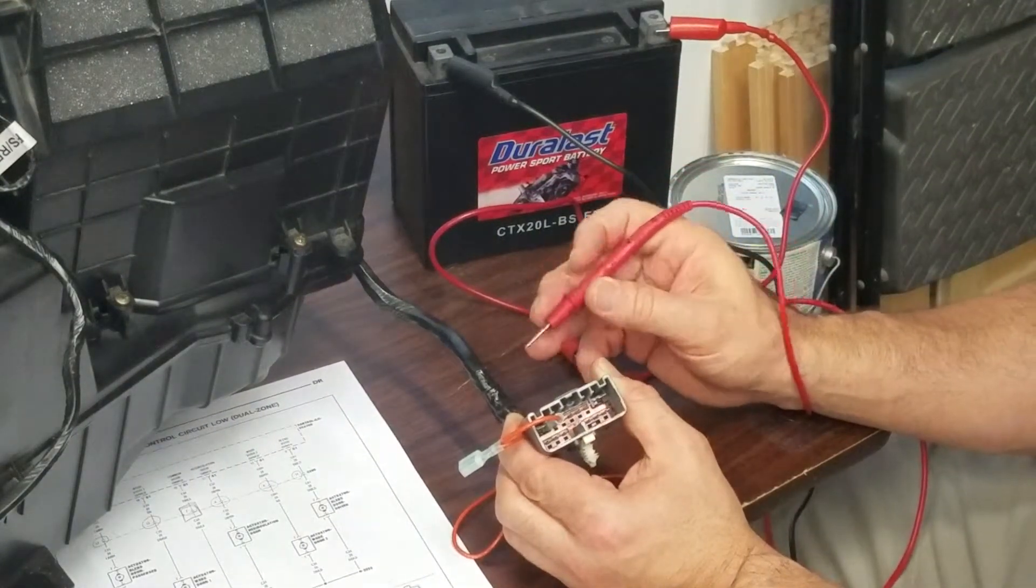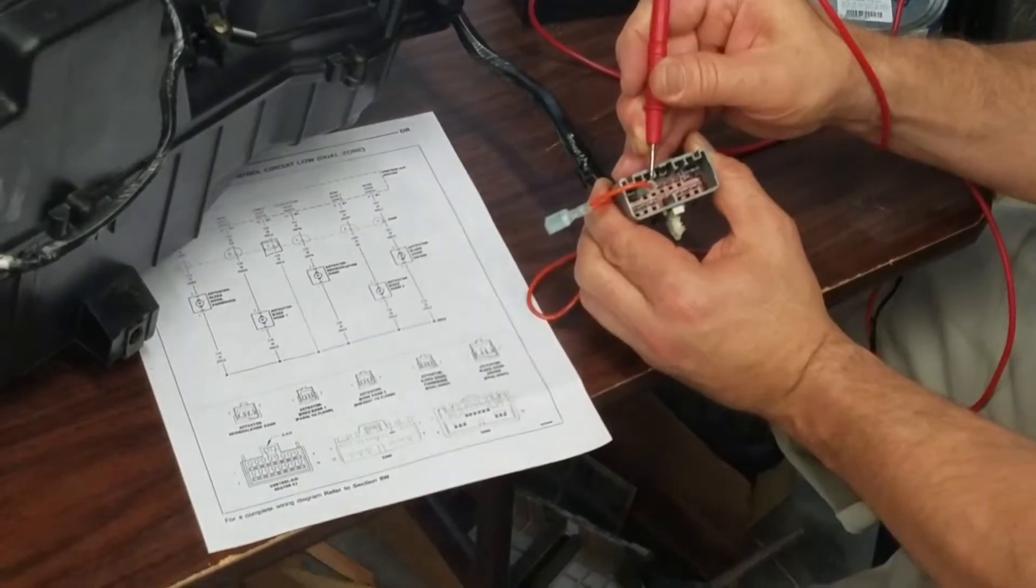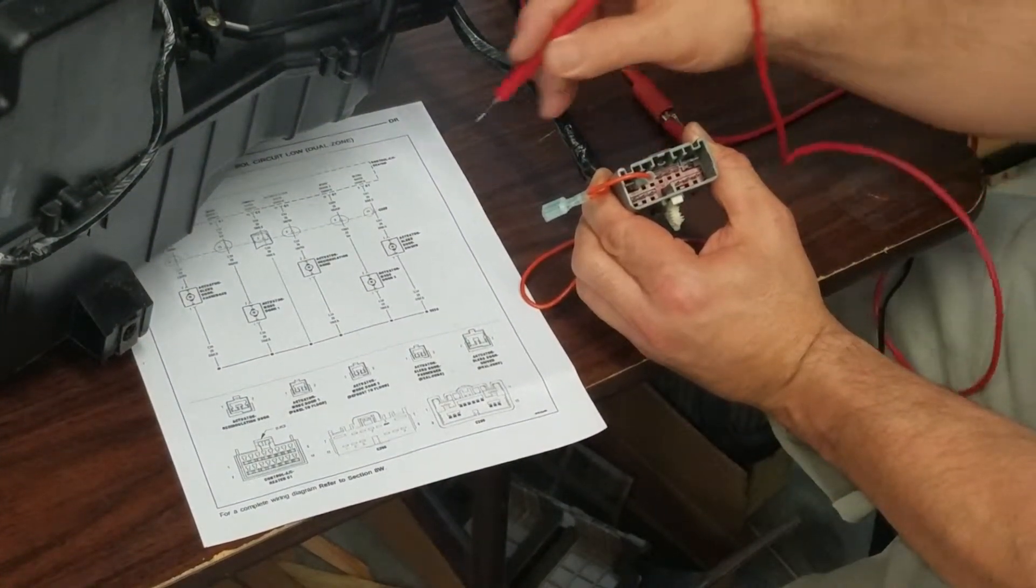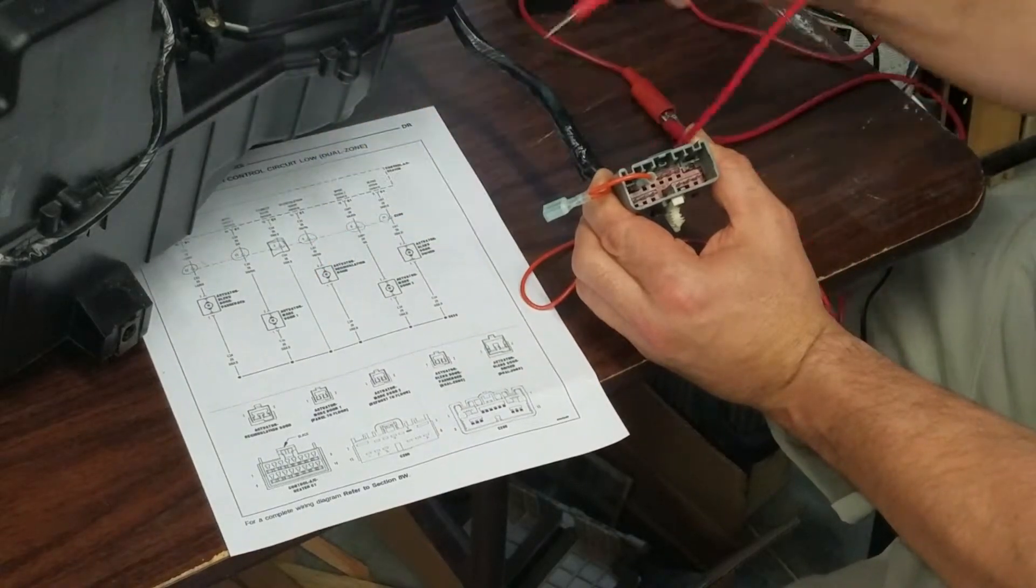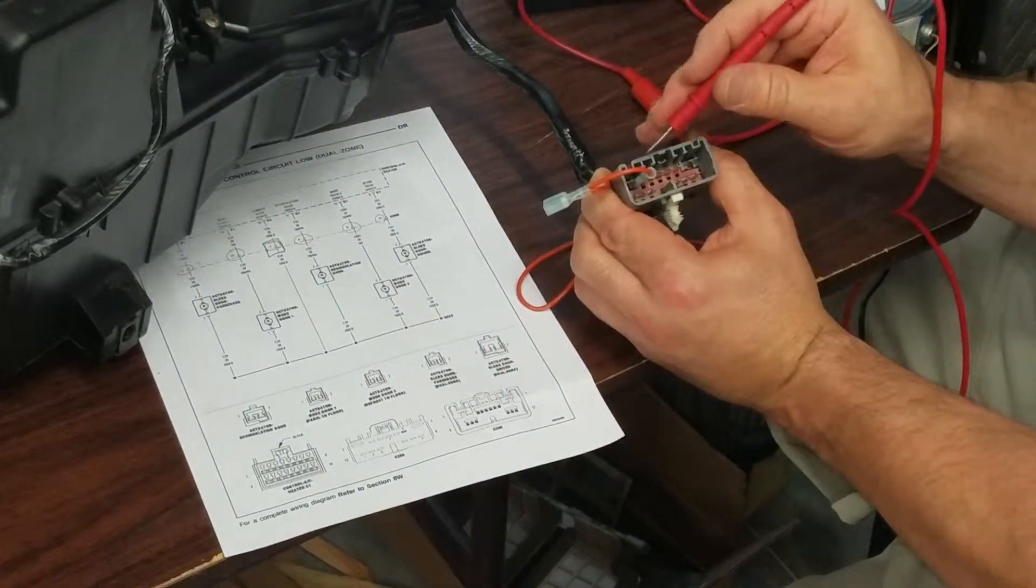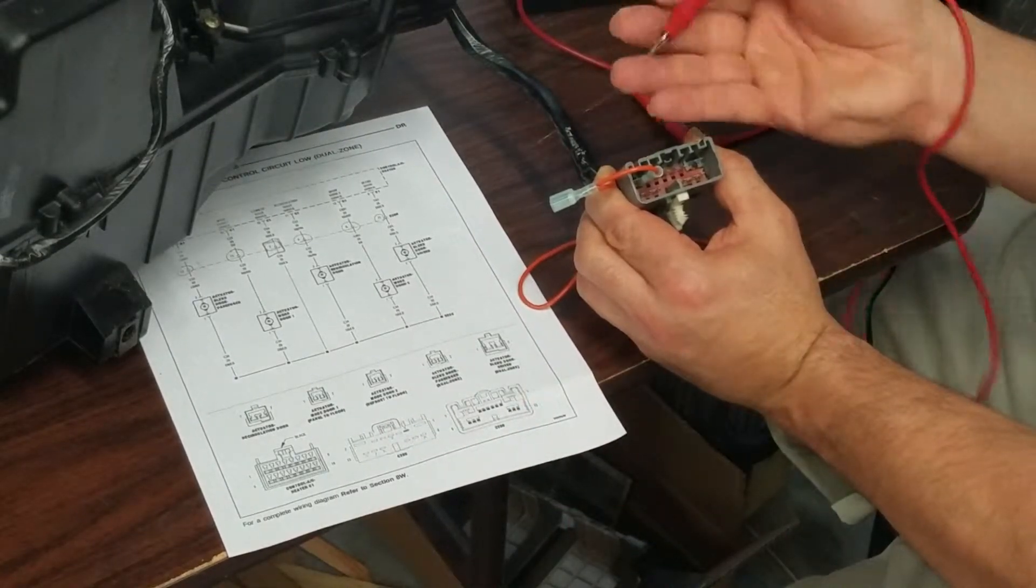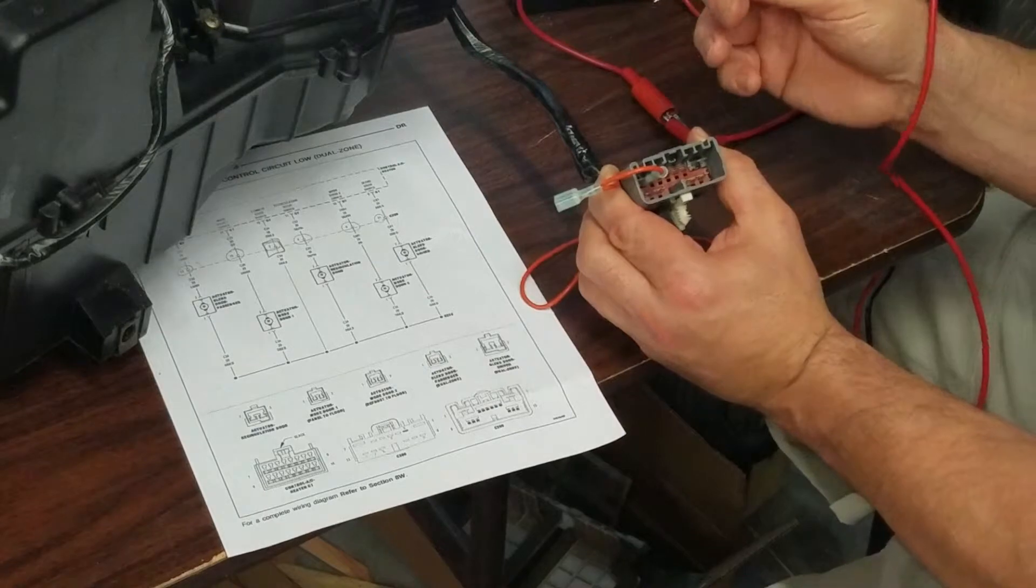Alright now you can see the connector. I've got one of the voltage pins on pin 2 which is the common to all the doors and now I'm going to walk through the other pins. You'll notice the pins are backwards from what's shown in the service manual because the service manual shows the other side of the connector.